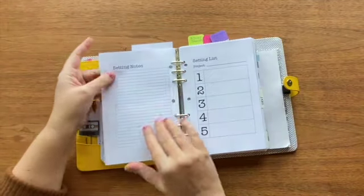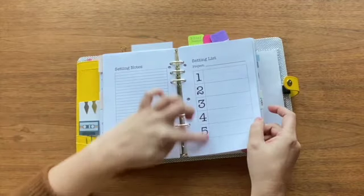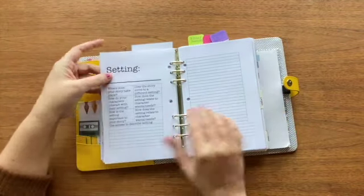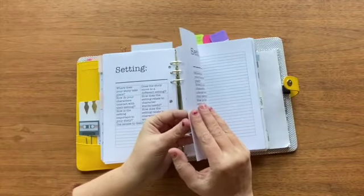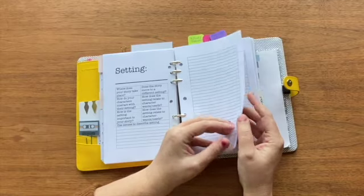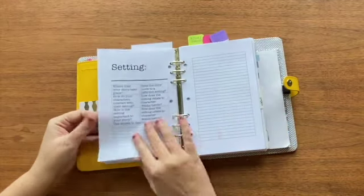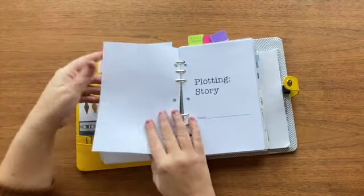And then I have setting. So there's a space here for notes. This is a list of settings I know will be in this book and then spaces for brainstorming with some questions for free writing for brainstorming the settings in this book.